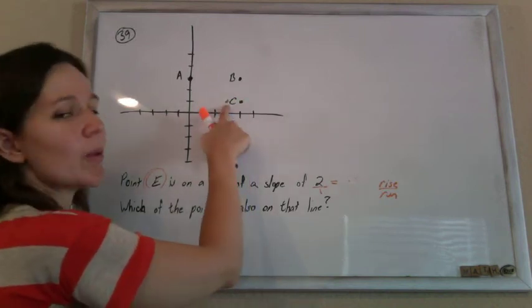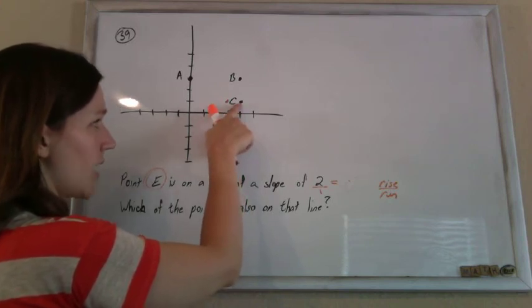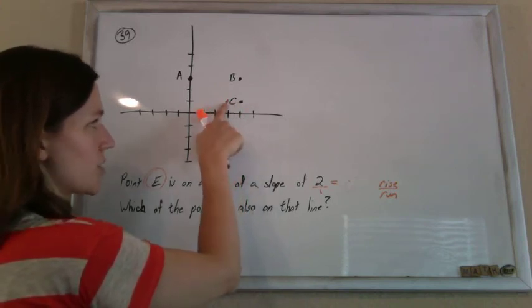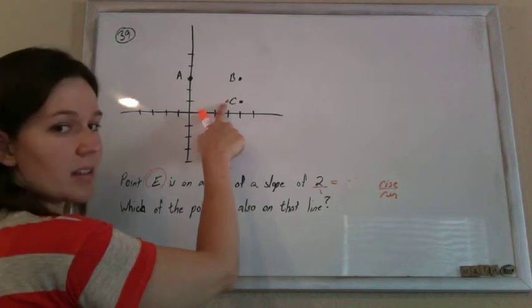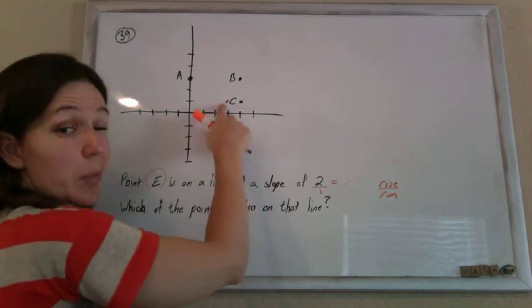Now that's so temptingly close to C, but that's not where the dot for C is, right? This dot for C is over here, and so this point, that's not C. So this point's on our line, but it's not any of the ones that they're asking about. So let's keep going.